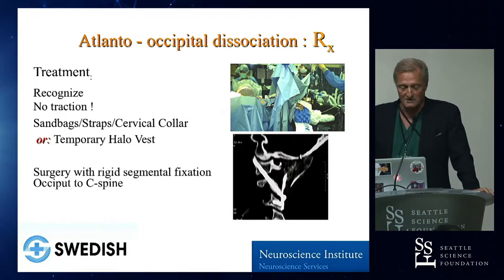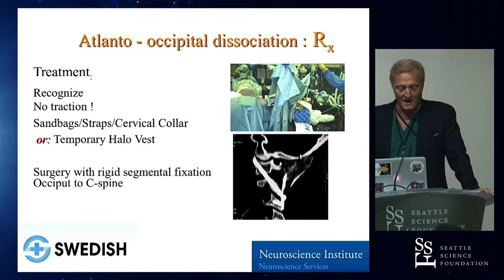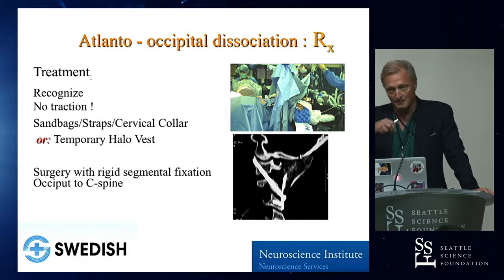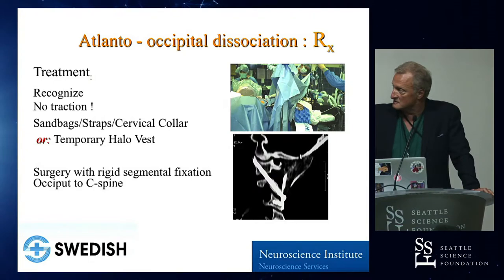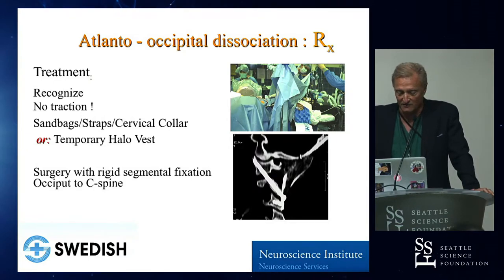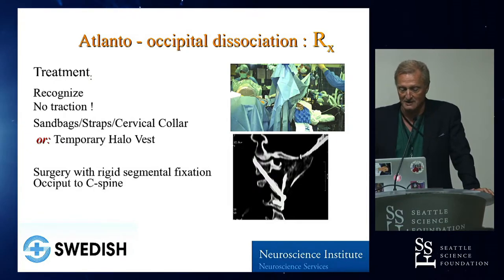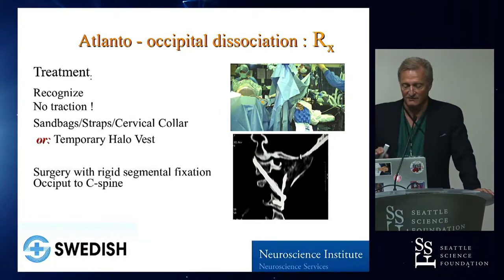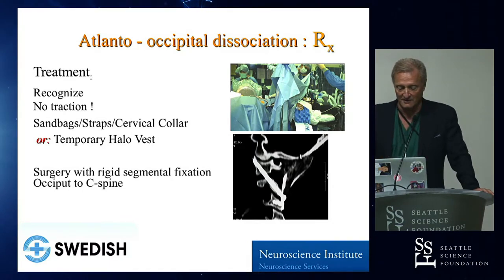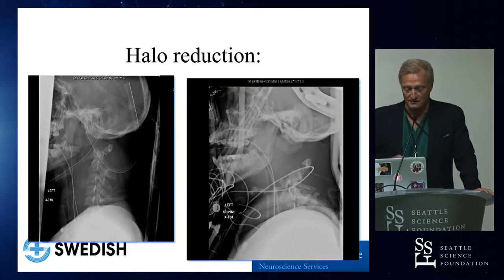Treatment is very simple: recognize it, recognize it, recognize it. Use sandbags. Put up a big sign: unstable cranial-cervical junction is present. This patient had an open femur fracture — we actually fixed the femur fracture, put her in a halo, checked the reduction multiple times, fixed the femur, and then fixed her actual cranial-cervical junction.